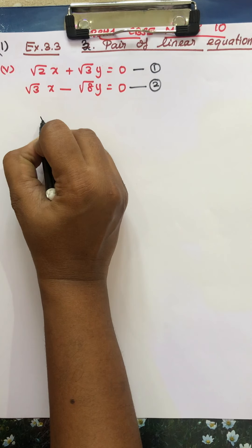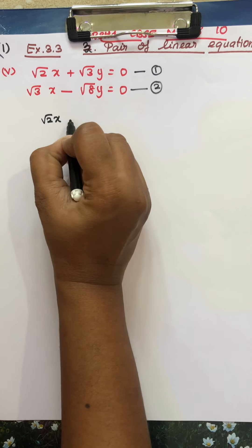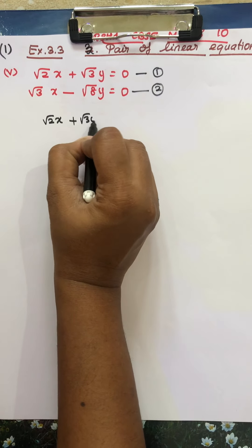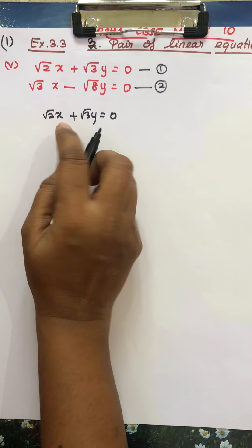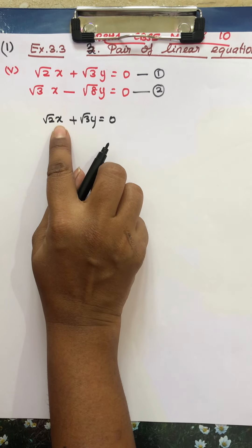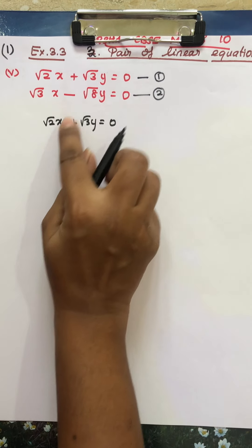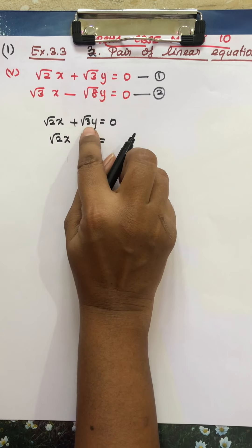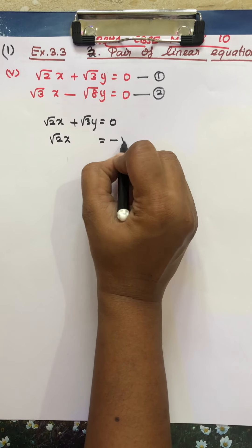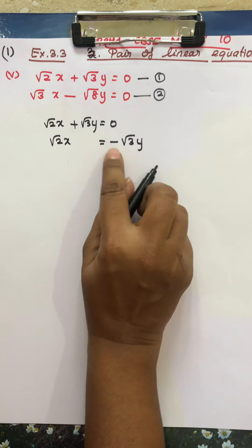See, now first equation. Root 2x plus root 3y equal to 0. So in substitution method, we'll find x value. Root 2x, this term is called, that means minus. Sign change. So here is plus, so here is minus.